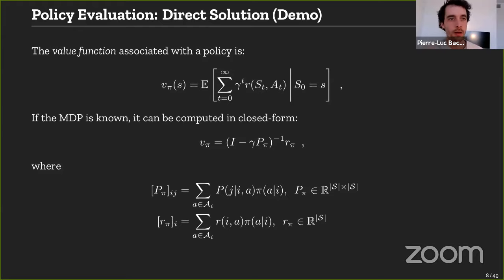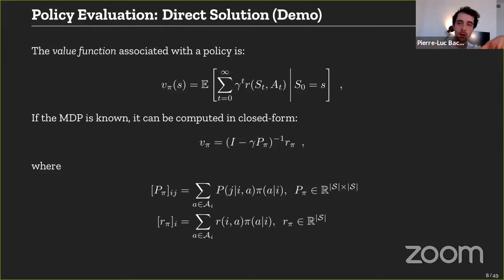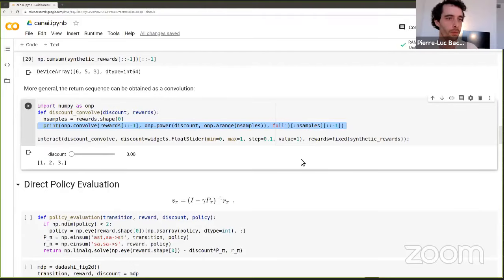Finding the expected return associated with a policy in every possible start state is called policy evaluation — a fundamental step for deriving other algorithms. That policy evaluation problem is inherently linear: it can be viewed as solving a linear system of equations. In closed form, you can compute the value function as (I - gamma * P_pi)^{-1} * r_pi, where P_pi is the state-to-state transition matrix under policy pi and r_pi is the corresponding reward vector.